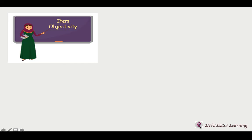Let's first discuss about item objectivity, which refers to the requirement that each item must call for a definite, single answer. As discussed in the previous video lecture about objective type questions, a definite answer is expected by the examiner. Concepts like ambiguity in the question, use of double negative words, or lack of proper direction affect the objectivity of the test.